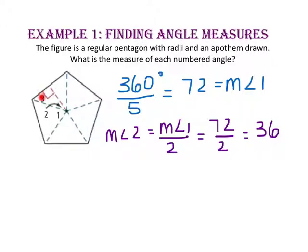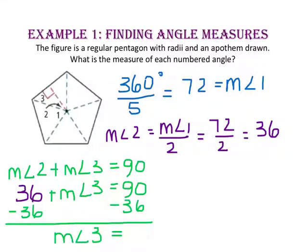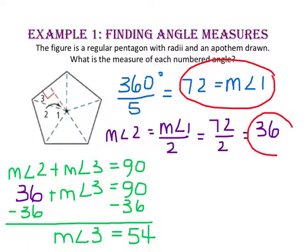To find the measure of angle 3, notice that the apothem creates a right triangle. We have a 90-degree angle here, and we know that the measure of angle 2 is 36 degrees. So the measure of angle 3 plus the measure of angle 2 will equal 90 degrees. Substituting 36 in for the measure of angle 2 and solving, we subtract 36 from both sides, and the measure of angle 3 equals 54 degrees. So the measure of angle 1 is 72 degrees, the measure of angle 2 is 36 degrees, and the measure of angle 3 is 54 degrees.